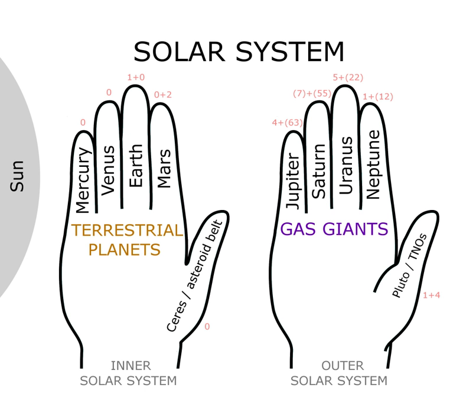The first thumb represents the Sun and asteroid belt, including Ceres, and the second thumb represents the asteroid belt and trans-Neptunian objects, including Pluto.